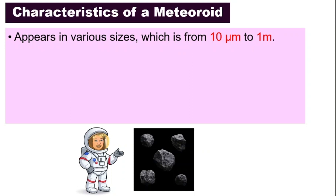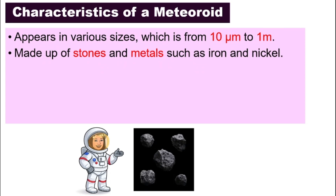To put that into perspective, if you have a ruler near you, 10 micrometers is smaller than 1 centimeter — it is very small. The biggest may be around 1 meter, which is 100 centimeters. Meteoroids are made up of stones and metals such as iron and nickel. Iron and nickel are different types of metals, and they fall under the category of metals.